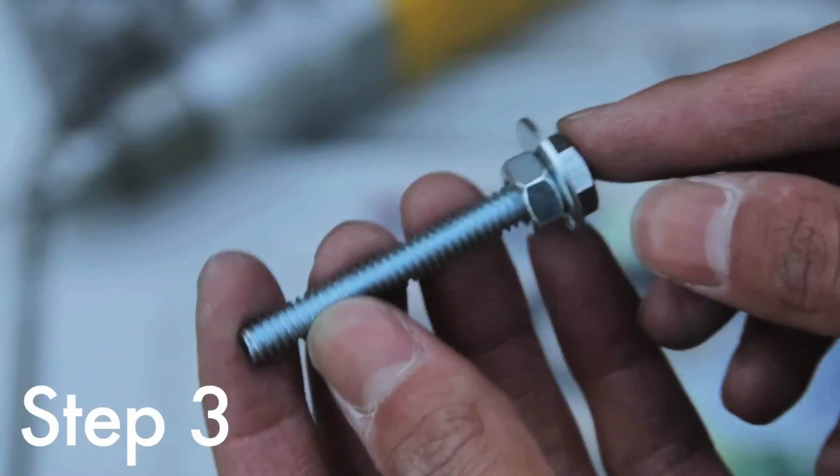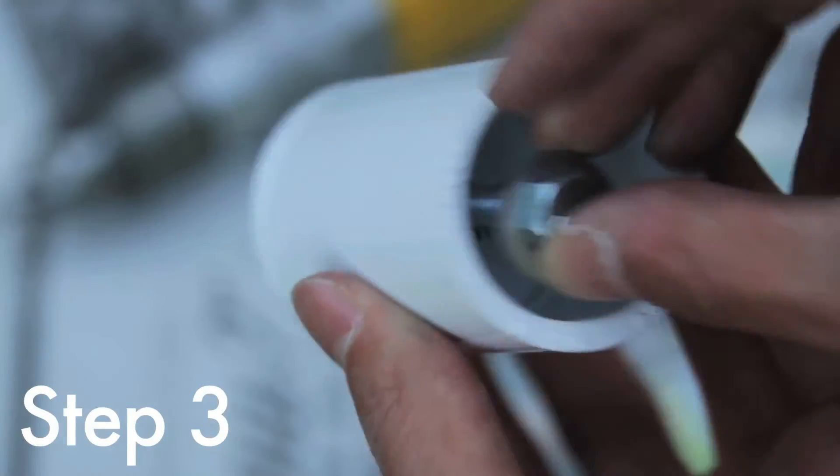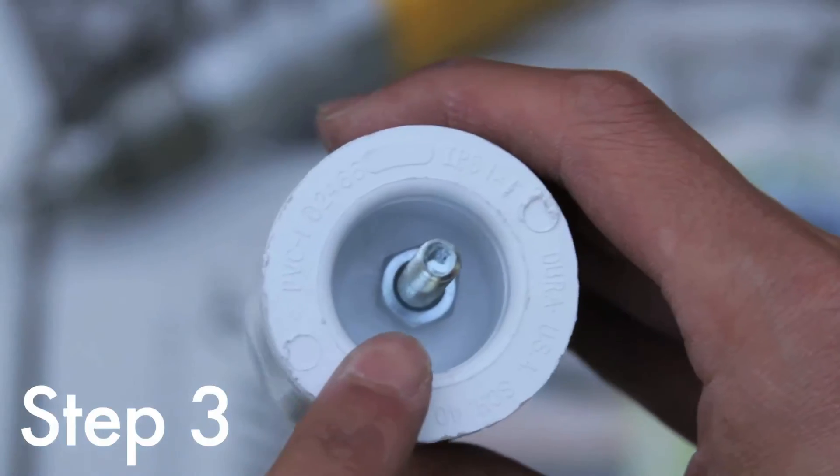Now put a washer and hex nut on the 1 and a half inch hex bolt, and connect that to the headpiece by using another hex bolt.